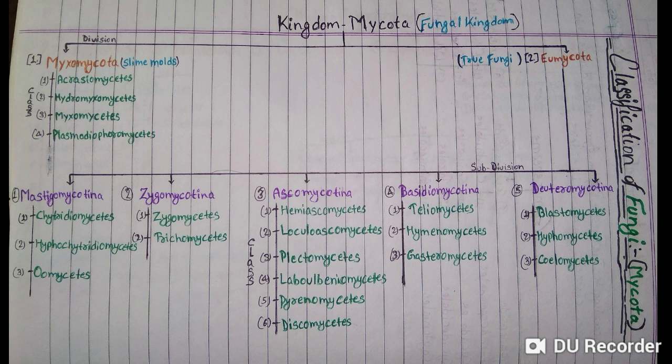The second division of the fungal kingdom is Eumycota. Eumycota is further divided into five subdivisions. The first subdivision is Mastigomycotina.